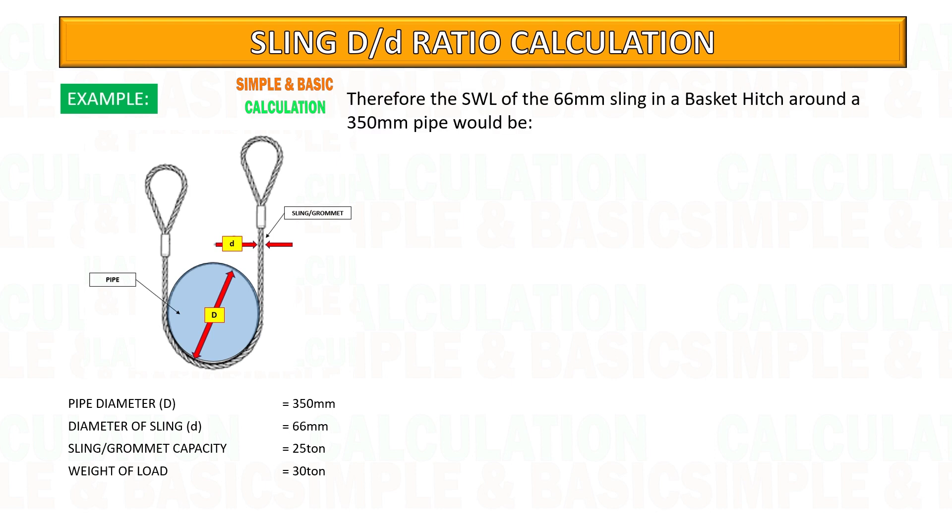So if you're using basket hitch, it will double up the capacity of the sling. But we need to multiply it by the reduction factor to get the final safe working load of the sling.